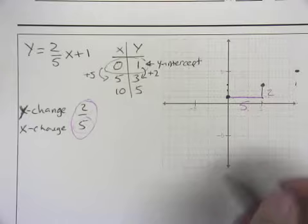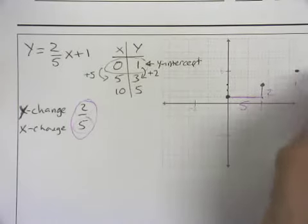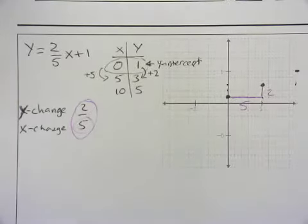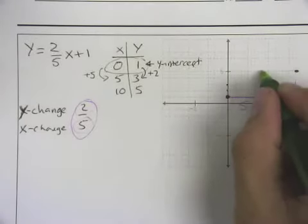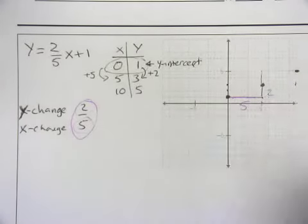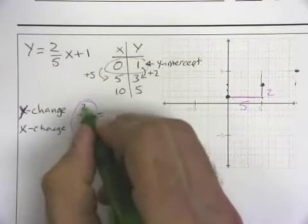So we can just move our pen along doing that rate of change to find more solutions. We can also move it in the other direction. But notice that if I move it in the other direction, I have to change my x by negative 5 and my y by negative 2.